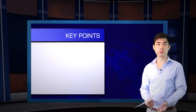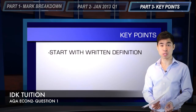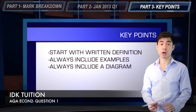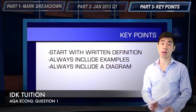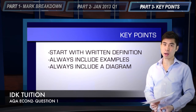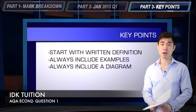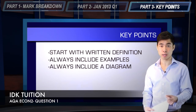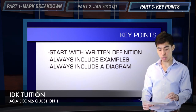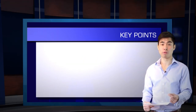Key points here: always start with your written definition, and then compensate for any omissions from this definition by including your example and your diagram. These are really, really important — your diagram and your example. I would always include these two features, even if you don't think they're exactly what the examiner is looking for. Remember, there is no negative marking in any of this exam. So you want to be taking a formulaic approach, always including the same features for any question. For a five-mark definition question, always include your examples and always include a relevant diagram.